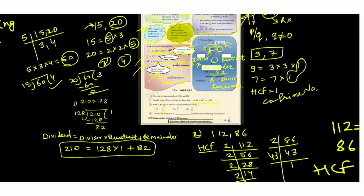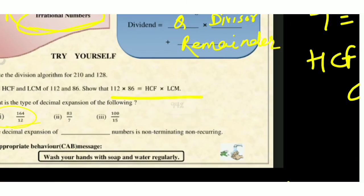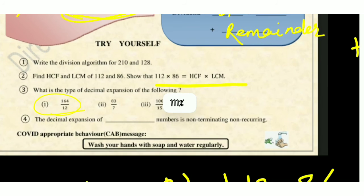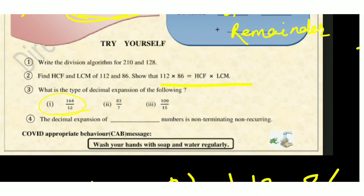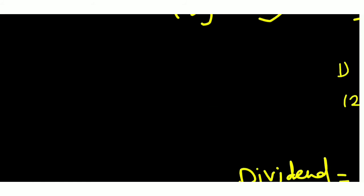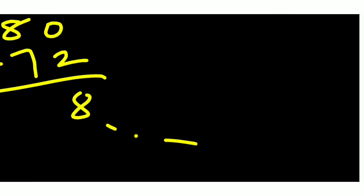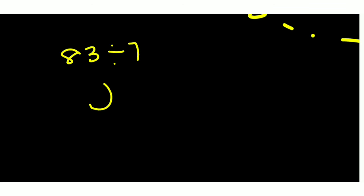The next number is 83 divided by 7. Let's perform the division of 83 by 7.